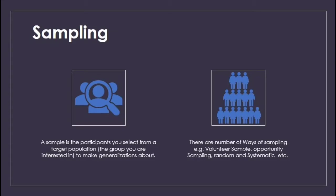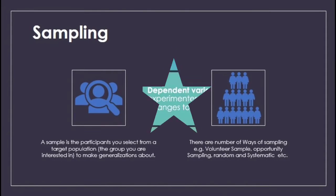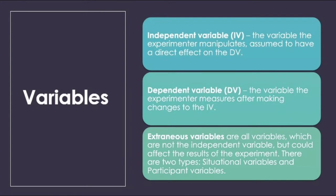Now we will talk about Variables. There are Independent Variables, Dependent Variables, and Extraneous Variables. Independent Variables: this is the variable that the experimenter manipulates — they can change, command, and control it — and it is assumed to have a direct effect on the dependent variable.